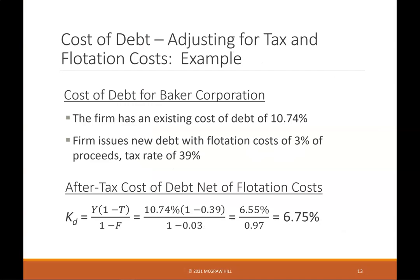Cost of debt example for Baker Corporation: The firm has an existing cost of debt of 10.74%. It issues new debt with flotation costs of 3% of proceeds and a tax rate of 39%. After-tax cost of debt net of flotation costs KD = Y × (1 − T) / (1 − F) = 6.75%.